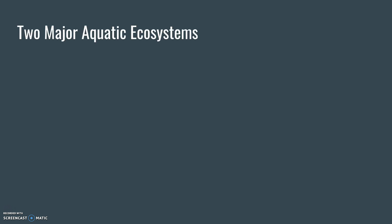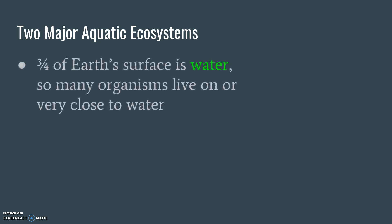There are two major aquatic ecosystems that you need to know about. You learned six terrestrial biomes; we're going to learn two aquatic, and that's that. Three quarters — so 75% — of Earth's surface is water.